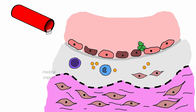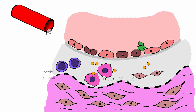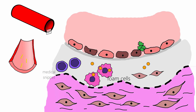Our immune system recognizes the oxidized LDL as exogenous, so monocytes and a few T-lymphocytes are recruited to the site of lesion to clear the oxidized LDL. Once the monocyte reaches the intima, it differentiates into macrophages. These macrophages then engulf the oxidized LDL. As the macrophages get filled with oxidized LDL, they are called foam cells. Foam cells are the hallmark of atherosclerotic lesions. To the naked eye, they are visible as an elongated yellow discoloration on the luminal surface of the artery, called a fatty streak — the first sign of atherosclerosis visible without magnification.